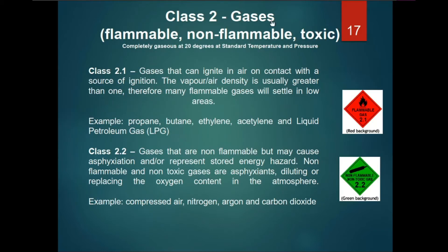Class 2 includes flammable, non-flammable, and toxic gases. Class 2.1 covers gases that can ignite in air on contact with a source of ignition. The vapor-air density is usually greater than one, so many flammable gases settle in low areas. Examples: propene, butene, and ethylene.